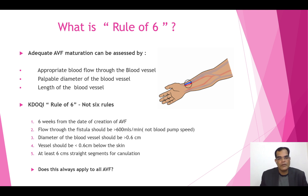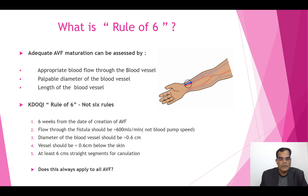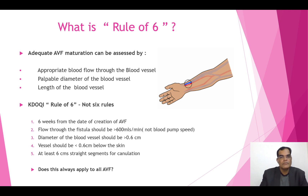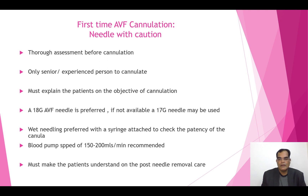So to summarize: wait six weeks, flow more than 600 mls per minute, diameter more than 0.6 cm, vessel depth no more than 0.6 cm, and at least six centimeters of straight cannulation area. However, this does not apply to all AV fistulas. If the patient is obese or has a larger arm, these rules may not apply, so always use your own center protocol.